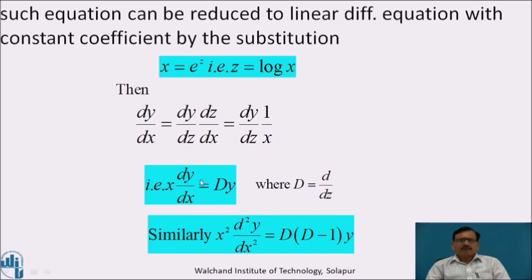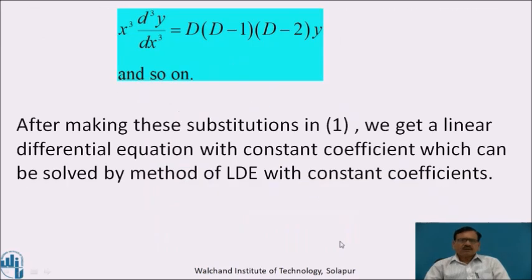Multiplying throughout by x, we get x dy/dx = Dy, where D stands for d/dz. Differentiating both sides with respect to x, similarly we get x² d²y/dx² = D(D-1)y. Similarly, x³ d³y/dx³ = D(D-1)(D-2)y, and so on.